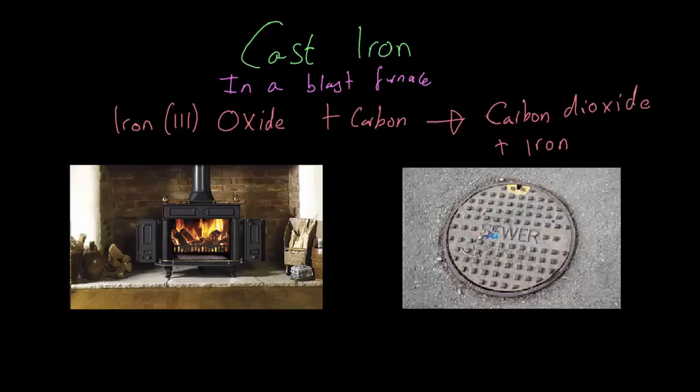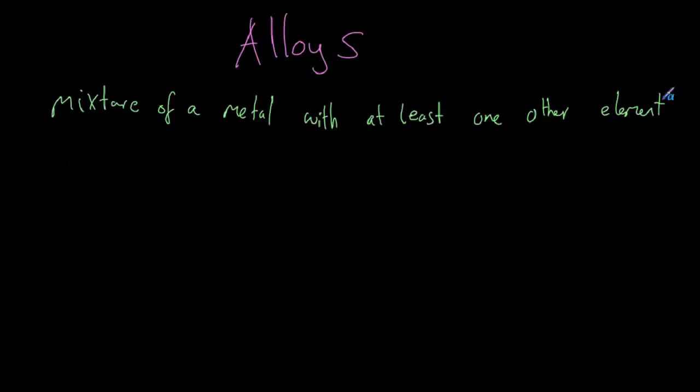So we don't actually use pure iron for very many things. What we will do though is control which impurities we put into a metal, and we will form what we call an alloy. We can think of an alloy as a mixture of a metal with at least one other element. That means if you have iron but within your iron you also mixed in some carbon and maybe some nickel, which is another metal, you will have formed an alloy, not just a pure metal.